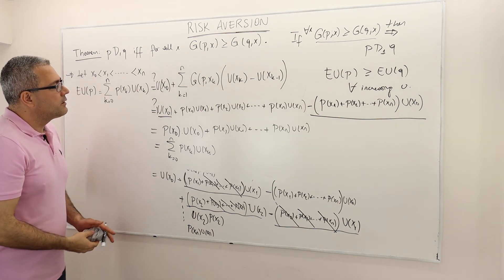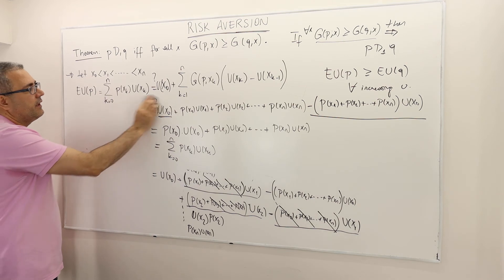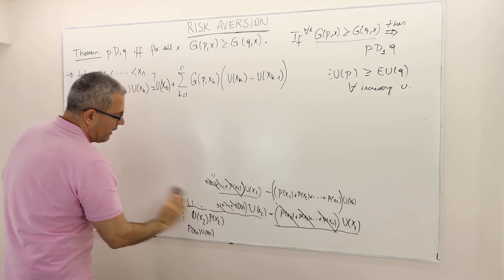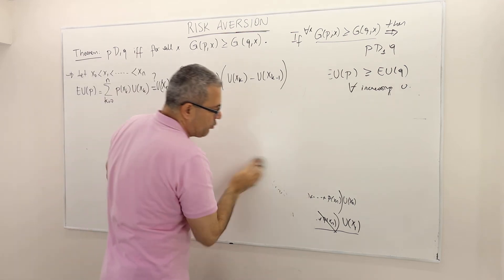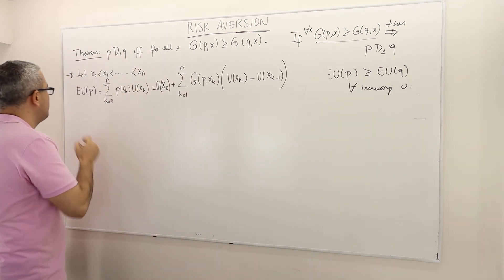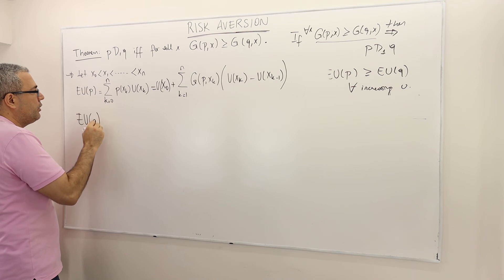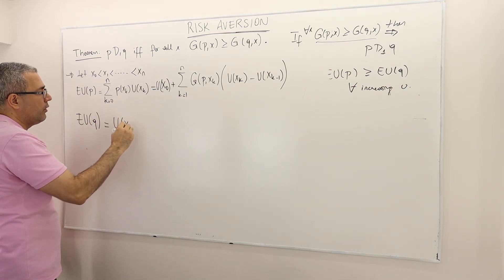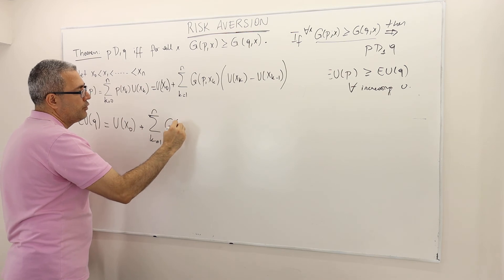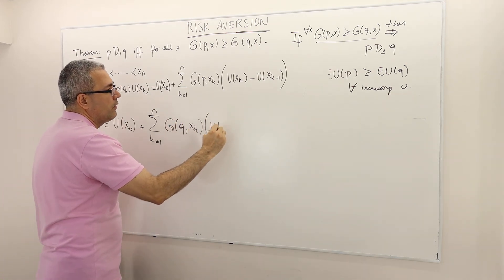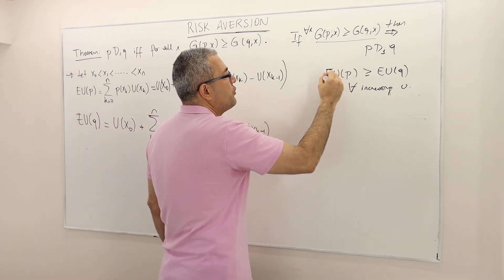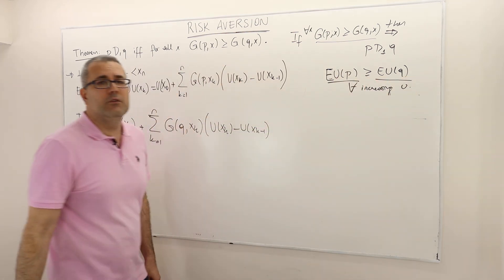Once I establish that the expected utility of lottery P equals U(X₀) plus that summation, I can write — with no question mark now since it's verified — the expected utility of lottery Q with exactly the same logic: U(X₀) plus the sum from K=1 to N of G of Q(X_K) × [U(X_K) − U(X_{K−1})].